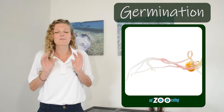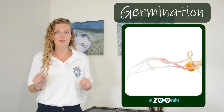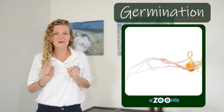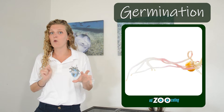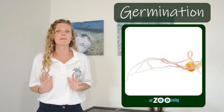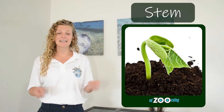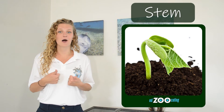Germination is the very beginning of the life cycle of a plant. It's when the seed breaks open and little roots start to form. Once those roots get in the soil, they can start absorbing nutrients and water, which encourages the plant to grow even more. Once the seed has germinated, it will also produce a stem.